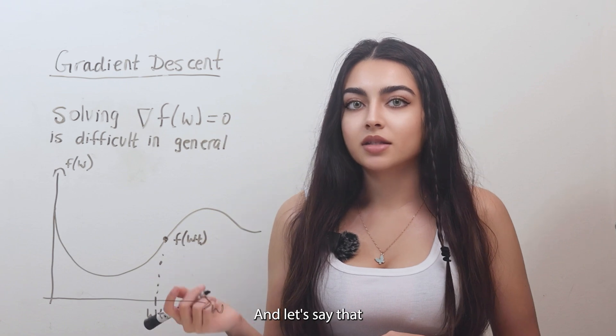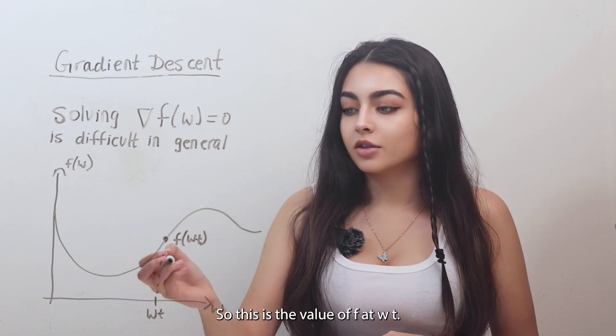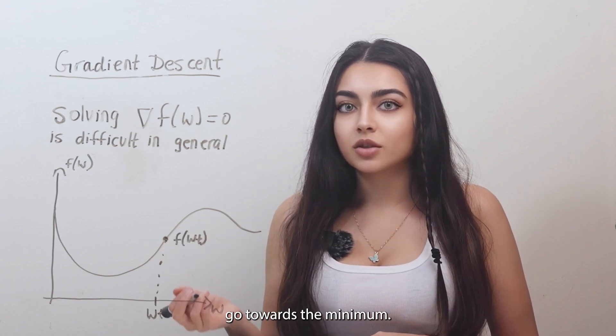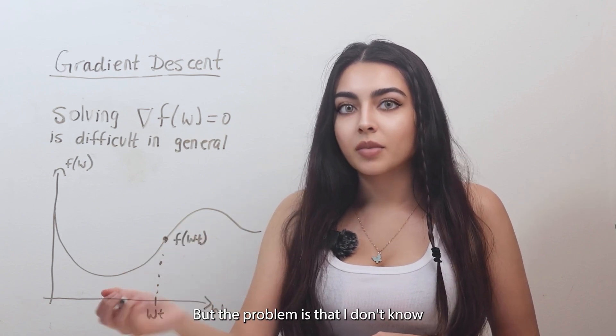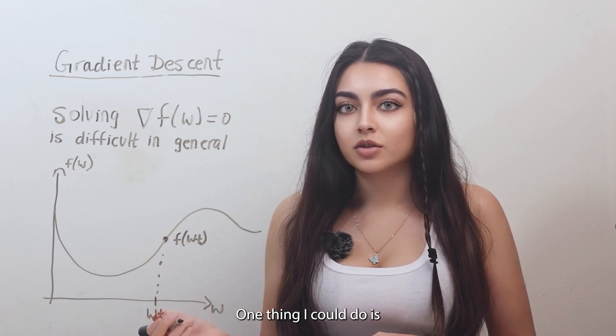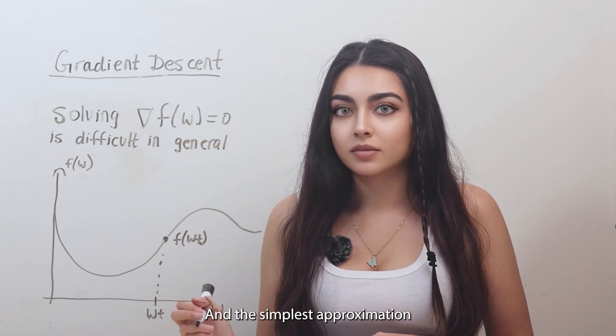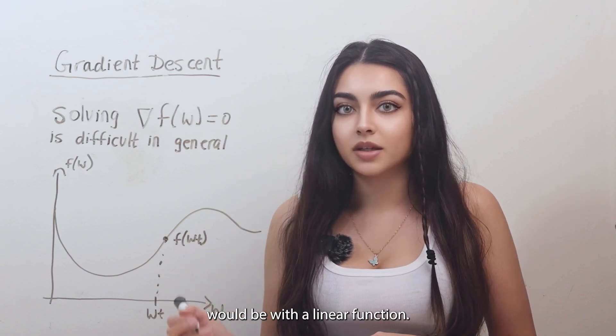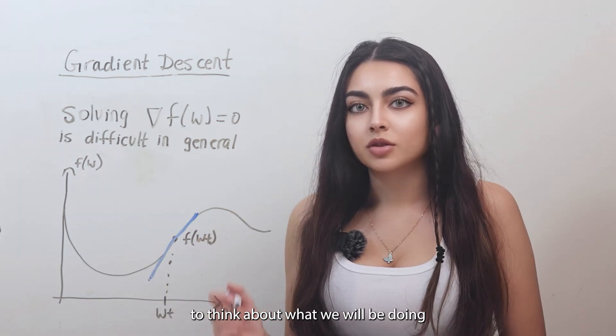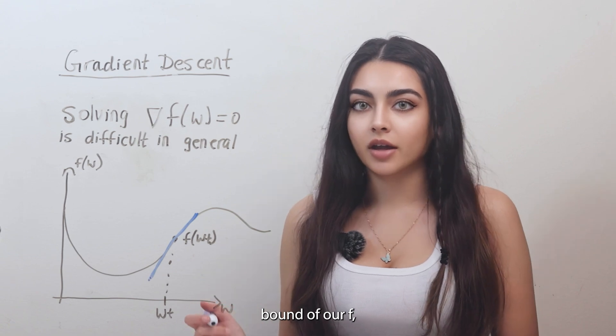So here's my function, and let's say that I am at this point wt. So this is the value of f at wt. And now what we want is to essentially go towards the minimum, but the problem is that I don't know in which direction the minimum is. One thing I could do is I could do some local approximation to the function, and the simplest approximation would be with a linear function.